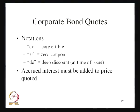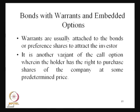Sometimes people use certain notations when they record these things. When they record it as CV, it is defined as convertible. If they write ZR, we call it the zero coupon bond. If they write DC (small d, small c), we call it deep discount — that means at the time of issuance. And always the accrued interest must be added to the price — the calculated interest that we are paying must be added to the price that has been quoted.